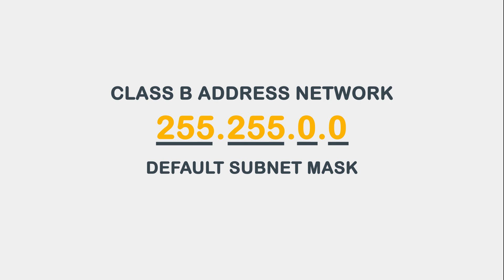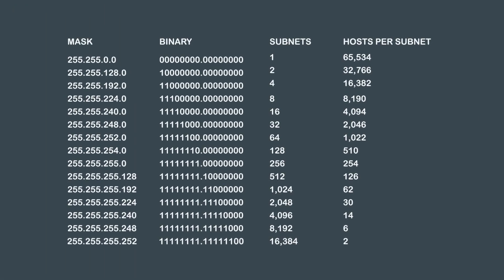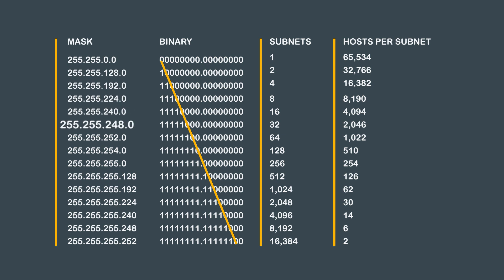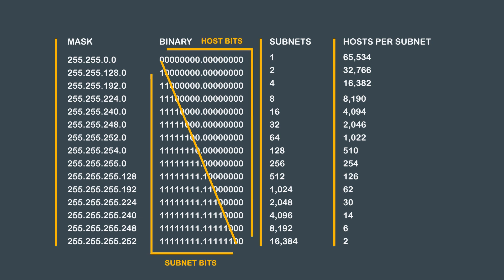255.255.0.0 is the default subnet mask for a Class B network. This graph is a list of all the possible subnets for a Class B network. As you can see, we gain subnets and lose hosts as we borrow more bits from our octets. Compared to a Class C network address, there are quite a few more masks we can use. Subnetting a Class B network is no more difficult than subnetting a Class C, but it can get confusing if you don't pay attention to where the subnet bits and host bits are in the subnet mask. Practice is key to success.